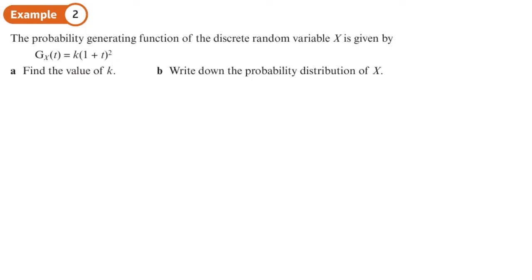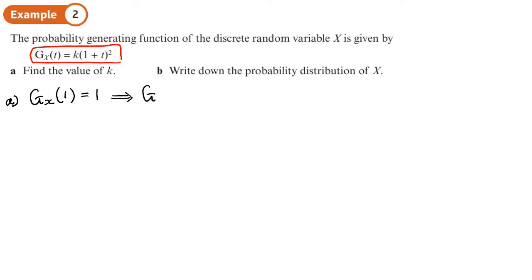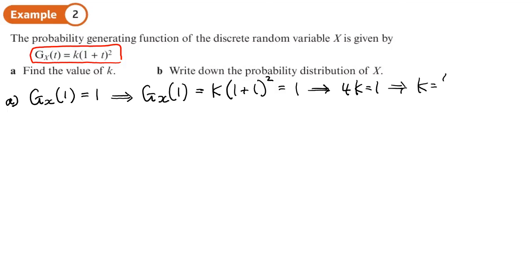The probability generating function of the discrete random variable X is given by an expression involving k. To find k, we use the property that when we substitute t equals 1, the whole expression gives 1. So G_X(1) equals k times (1 plus 1) squared equals 1, which gives 4k equals 1, so k equals one quarter.